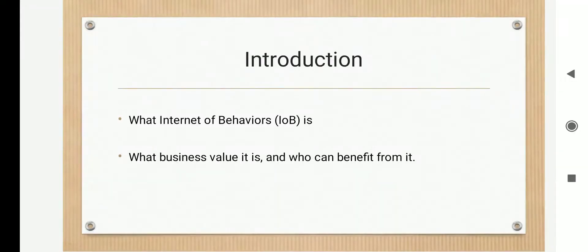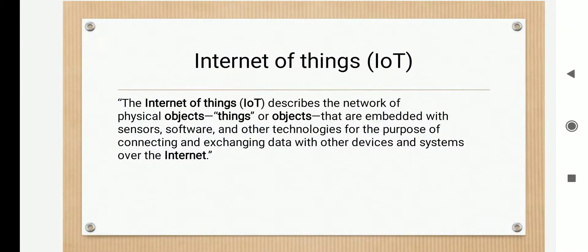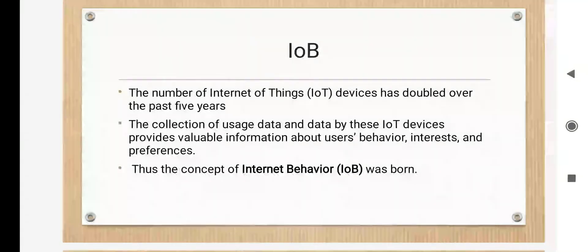Throughout this session we will be looking into what is IOB, what are the business values of IOB, and what are the benefits of using IOB. Internet of Things describes the network of physical objects embedded with sensors or software for the purpose of connecting and exchanging data with devices over the internet. It is important to know what is IoT because IOB is an extension of IoT. The number of IoT devices has doubled over the past five years. The collection of usage data by these IoT devices provides valuable information about users' behavior, interests, and preferences, and thus the concept of Internet of Behavior was born.